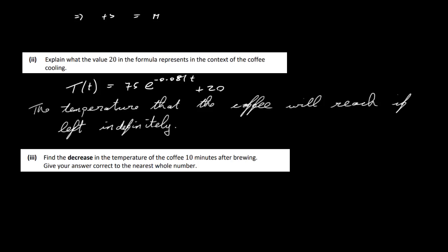If you were to leave the coffee for a long period of time, eventually it will reach 20 degrees. Now let's look at part 3: find the decrease in the temperature of the coffee 10 minutes after brewing, giving your answer correct to the nearest whole number. We know that it starts at 95 degrees, so we've got to work out what temperature it reaches after 10 minutes and then subtract the two.